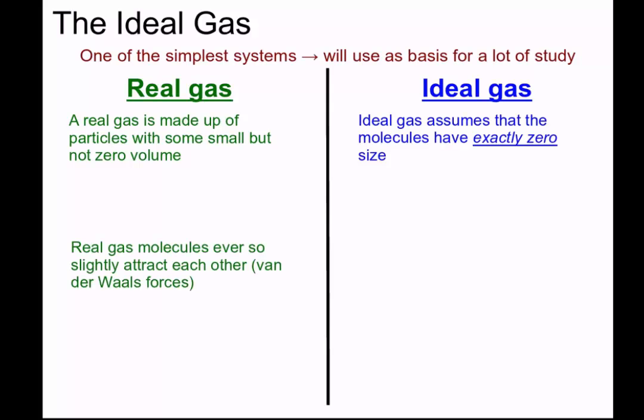Similarly in a real gas the molecules attract each other ever so slightly through van der Waals forces and the like. An ideal gas molecule however does not attract another ideal gas molecule. They don't interact with each other at all.